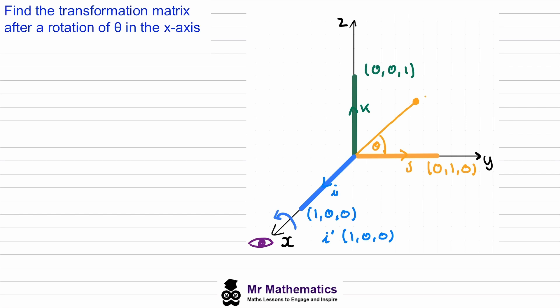This will be our transformed image of j. We know it still has a length of one, but its y and z values have changed. Using a right angle triangle, the y value will be the adjacent length, and because the hypotenuse is one, this will be cos theta. The z value will be the opposite length, which is sine theta. So the transformed image of j will have coordinates (0, cos theta, sine theta).